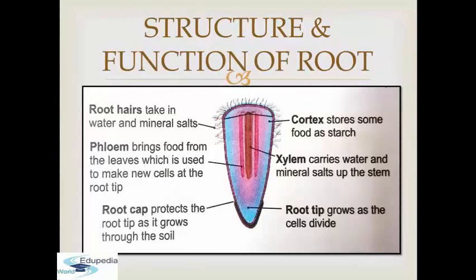In this image you can see the structure of root. Look at these root hairs — they take in water and mineral salts. Look at this cortex — it stores some food as starch. Phloem brings food from the leaves which is used to make new cells at the root tip. Xylem carries water and mineral salts to the stem. This is the root cap which protects the root tip as it grows through the soil. The root tip is protected by the root cap and grows as the cell divides.